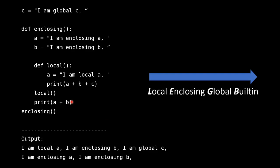We also call a plus b at the enclosing level. The same rule applies: the LEGB rule is followed in only one direction, so when evaluating an expression at the enclosing level, the local namespace is never looked up. It finds the enclosing a and the enclosing b — never the local a. This is exactly the printout we would expect from the LEGB rule.